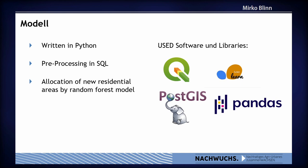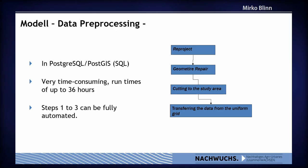To simulate the allocation process of residential areas, we use a random forest model. But before we can use the model, we must preprocess the data in SQL. First, we bring all data into a uniform projection, then repair broken geometries and topologies, then clip the data to the study area, and finally transform the data into the uniform grid.